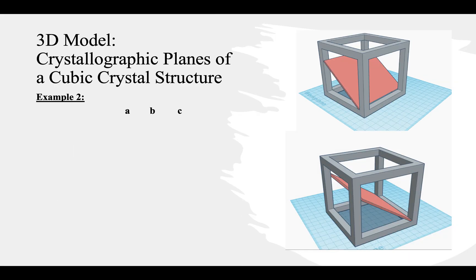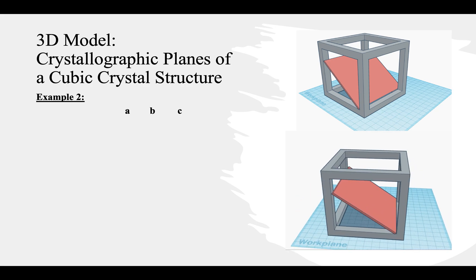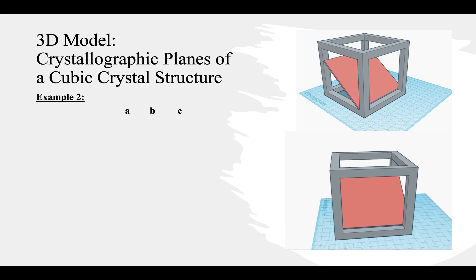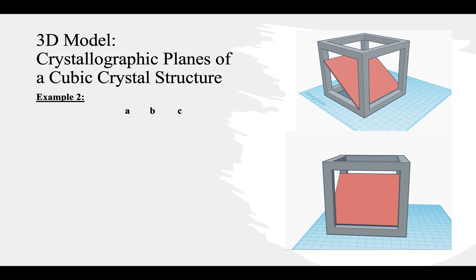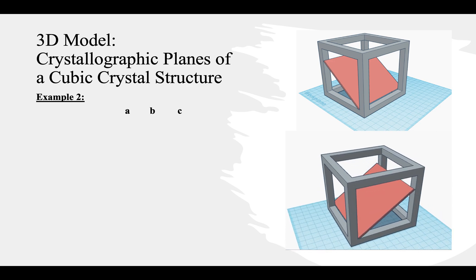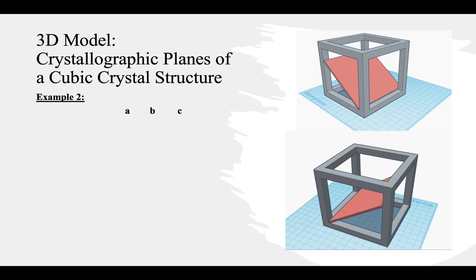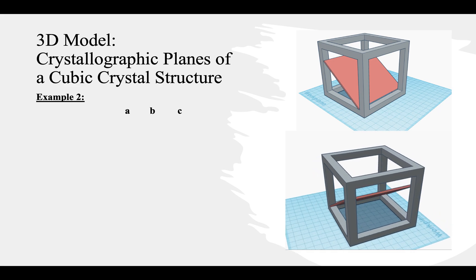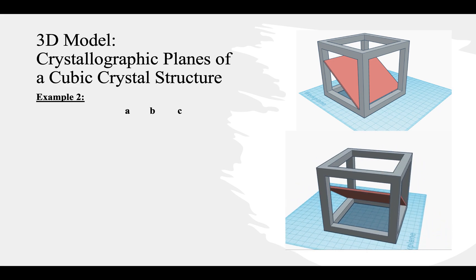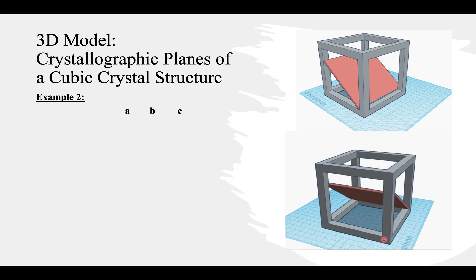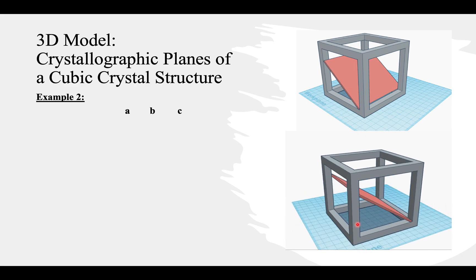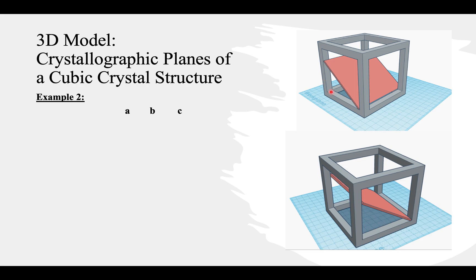Now I will demonstrate how to solve a slightly more complex example with the second 3D cubic crystal structure that I created. As you can see here on the bottom right, this is all the different angles of my second 3D model. First, checking to make sure that the plane does not pass through the origin. The origin is right here at this corner, and also right here on this angle of this corner. It is not.